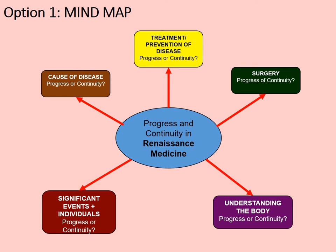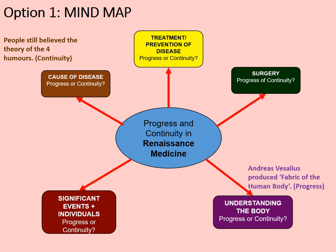Here are some examples of what you might include in your notes. People still believed in the theory of the four humours — that's an example of continuity. Notice how I've given the fact and indicated that specific example is continuity. Andreas Vesalius produced the Fabric of the Human Body — that would be an example of progress. What you'll see during this lesson is a series of screens with information to place around your diagram. That's the extra level of analysis and thinking you'll need to do for yourself.